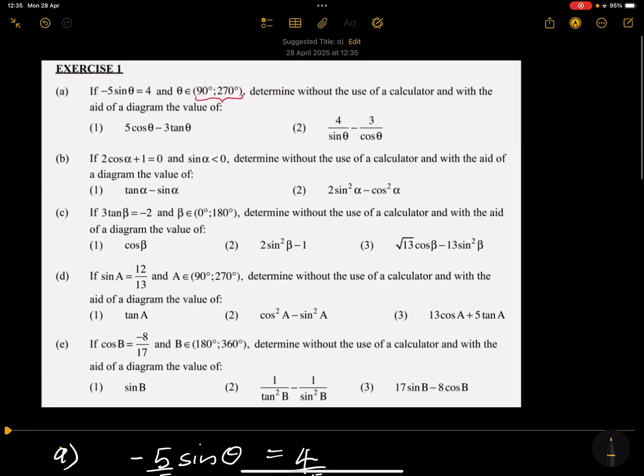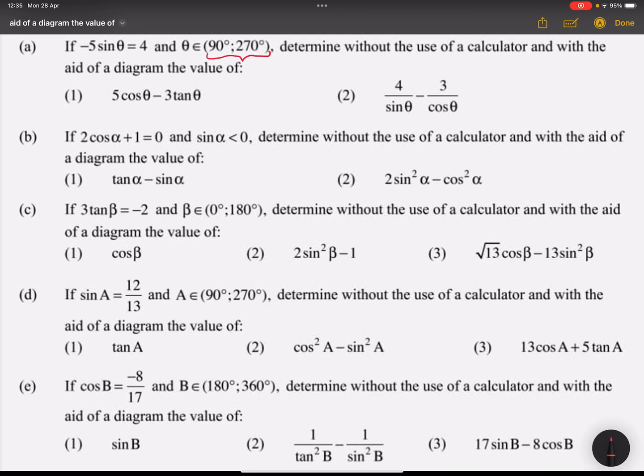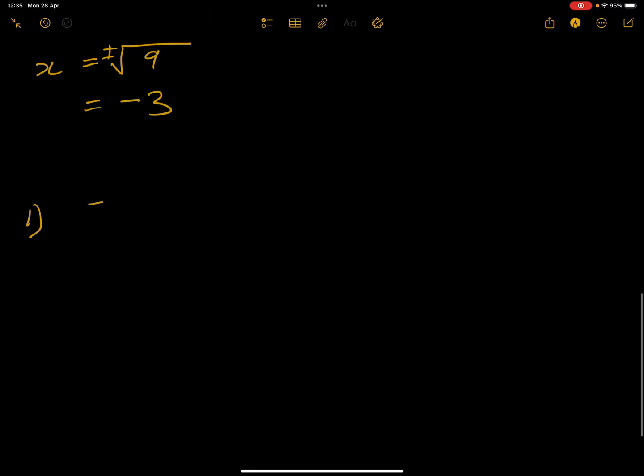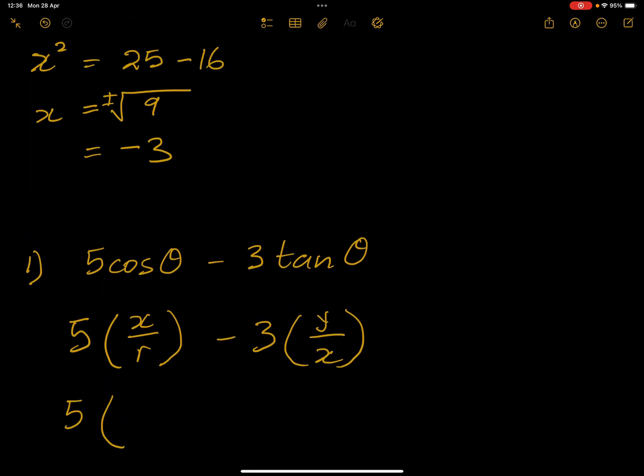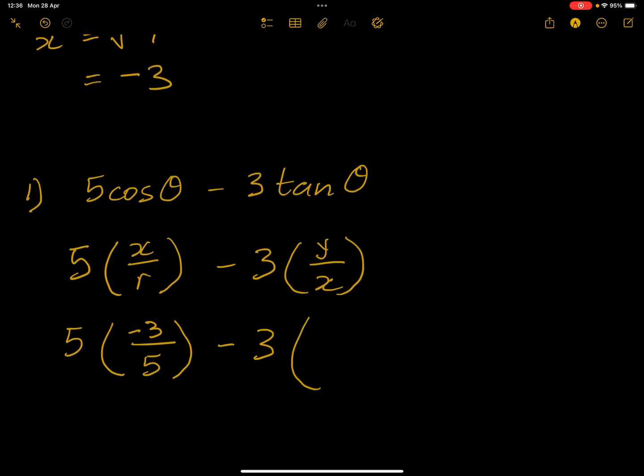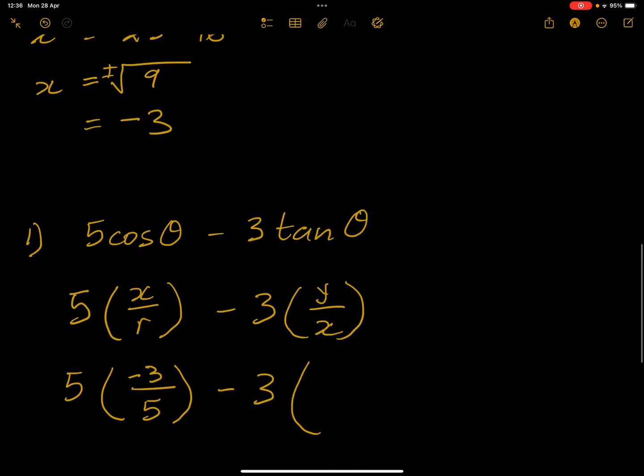Now they had said to us, please I want you to note, they said determine the value of 5 cos theta minus 3 tan theta. So let's find that out. We know that cos is x over r and tan is y over x. So this would be 5 into our x value, which is negative 3, and our r is 5, minus 3 times y, our y value was negative 4, that's negative 4 divided by x which is negative 3.